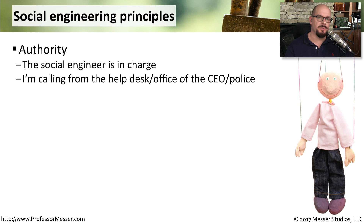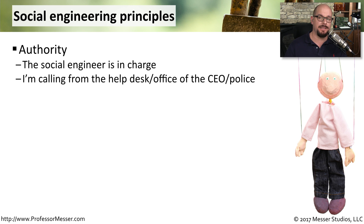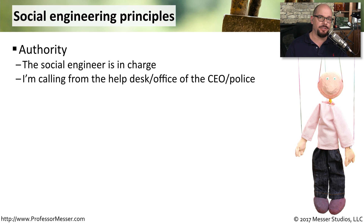There are a number of principles associated with social engineering. The first one is authority. The social engineer — the person trying to gain access — will pretend that they have some type of authority that allows them access to this information. They may say that they're calling from the help desk, that they're with the police department, or that they might be with the office of the CEO, instantly making us think we need to provide information to them.